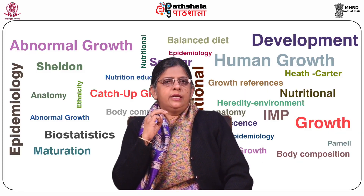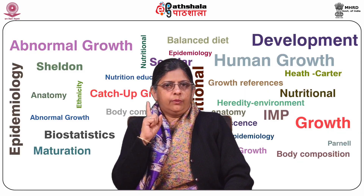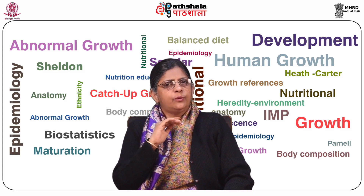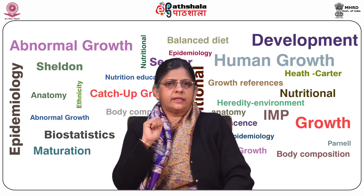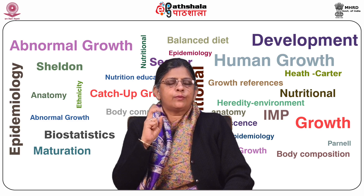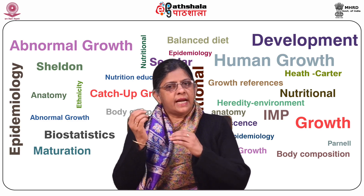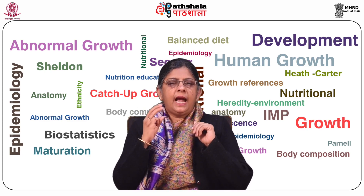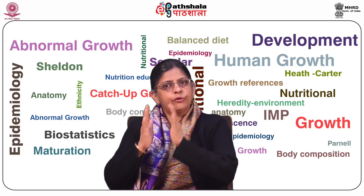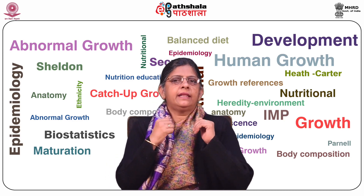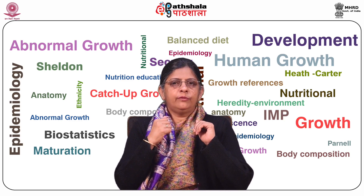There are three ways or techniques of obtaining the somatotype. One, the anthropometric method in which an anthropometer is used to estimate the somatotype. Two, the photoscopic method in which ratings are made from a standardized photograph. And three, the anthropometric and photoscopic method which combines both the anthropometric and ratings from a photograph.